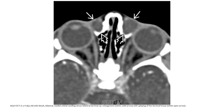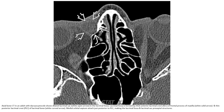Contrast-enhanced NCT in a four-day-old shows bilateral medial orbital sparring with bilateral lacrimal sac enlargement and splaying of the lacrimal fossa. On CT, the lacrimal cystocele is seen dilating the lacrimal sac in the lacrimal fossa, which is formed by the thick anterior lacrimal crest of the frontal process of the maxilla and the thin posterior lacrimal crest of the lacrimal bone. The medial orbital septum attaches just posterior to the posterior lacrimal crest, making the lacrimal fossa and lacrimal sac a preseptal structure.